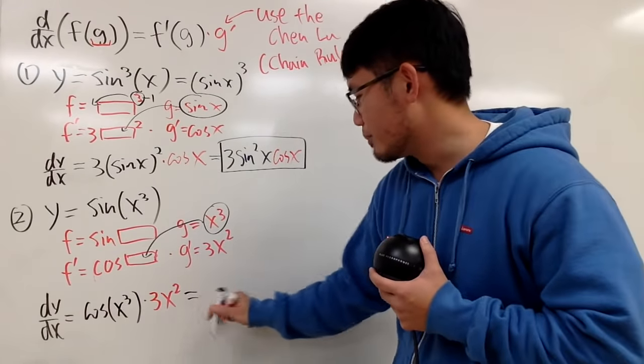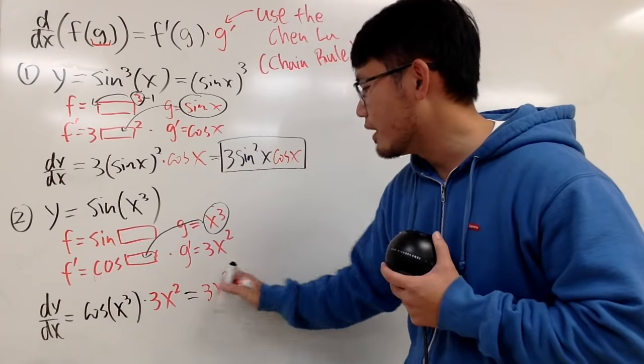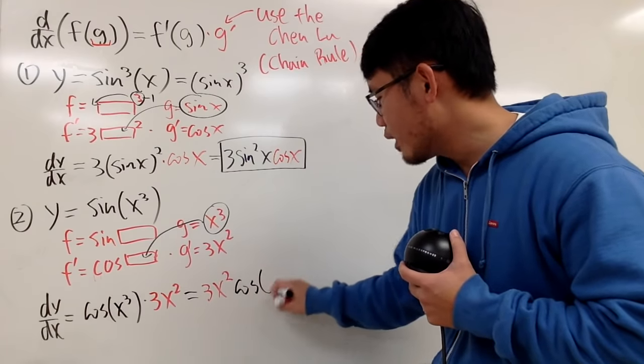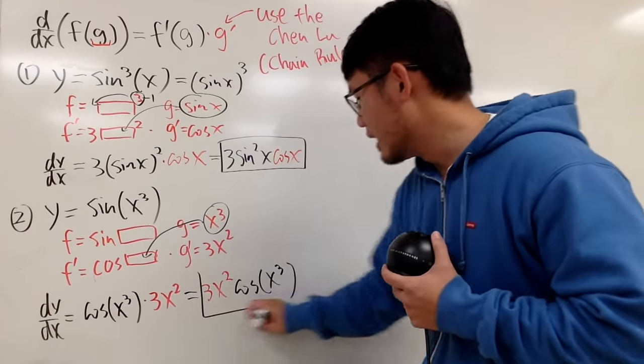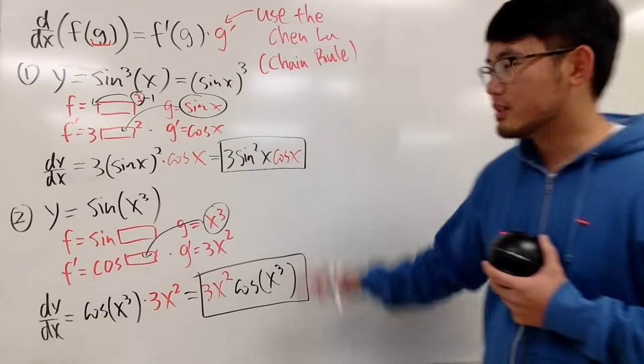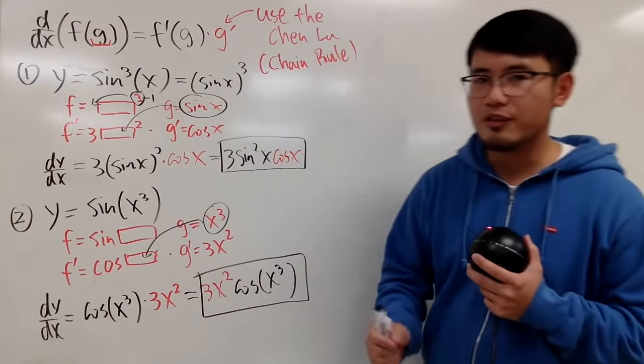And once again, you can rewrite this a little bit. You can put this in the front. So we have 3x squared, and you multiply by cosine of x to the third power, like this. All right? So you do get two very different answers.